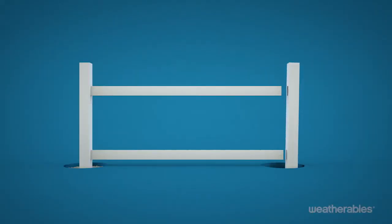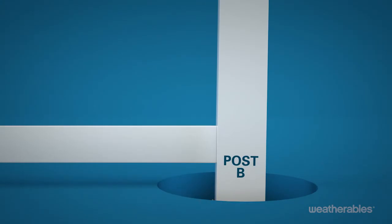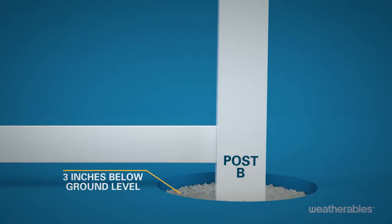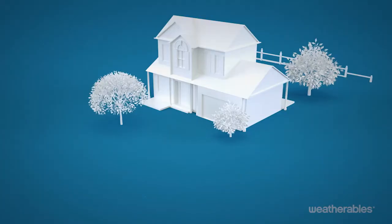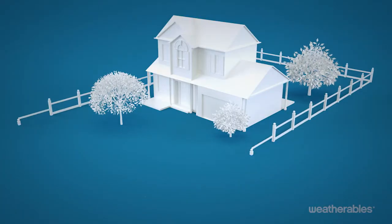Next, slide the bottom rail and then the top rail into post B. Pour concrete around post B to about three inches below ground level. Level and plumb. Repeat down the fence line to install the remaining posts and rails.